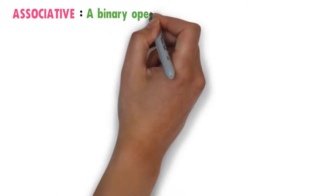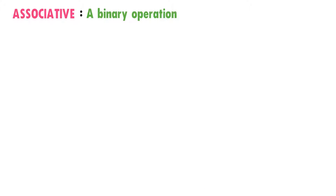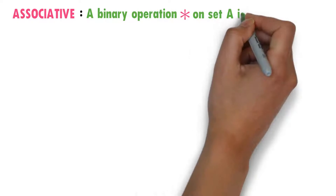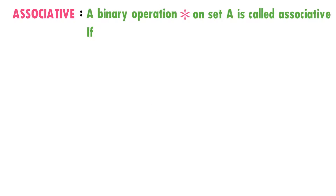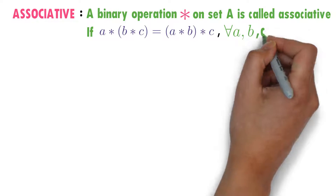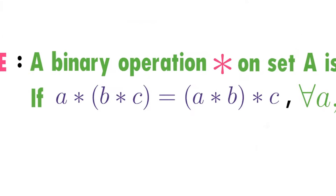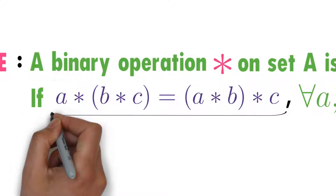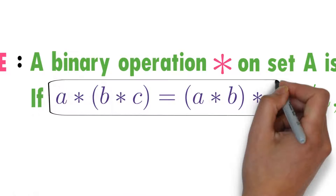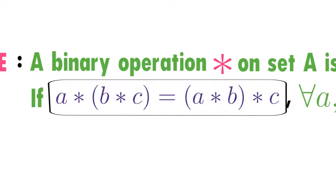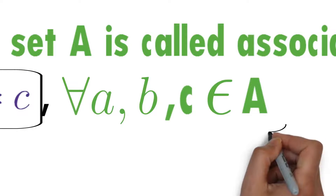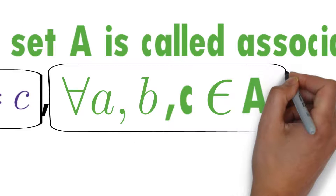A binary operation star — and see here, star is already a binary operation — on set A is called associative if A★(B★C) equals (A★B)★C for every A, B, and C belonging to set A.